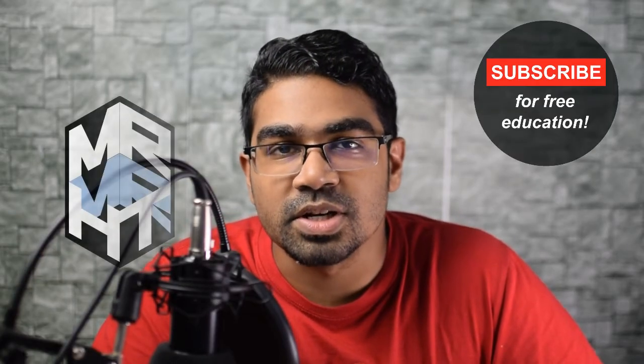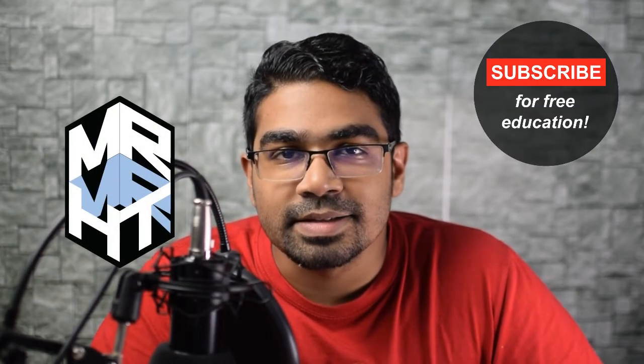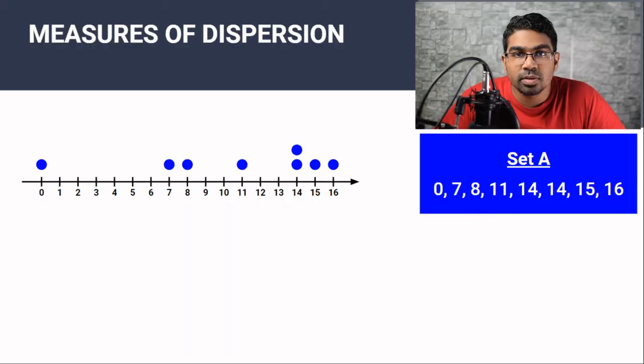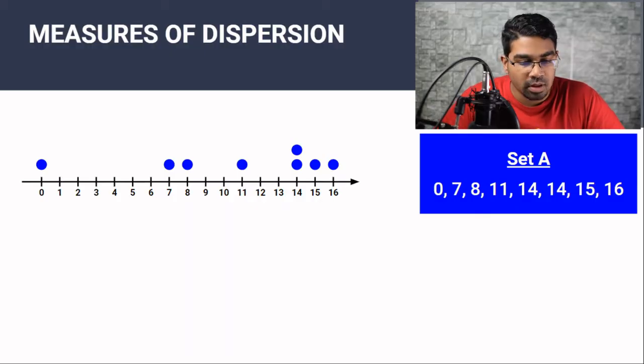There are generally four measures of dispersion. Let's take a look at what they are. First, what are measures of dispersion?